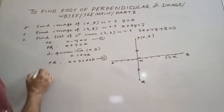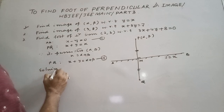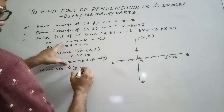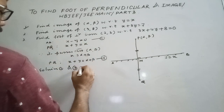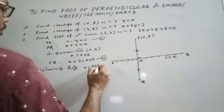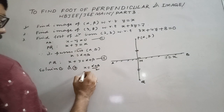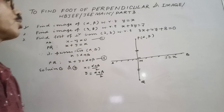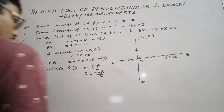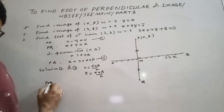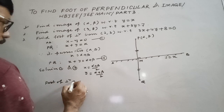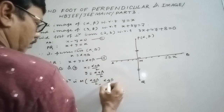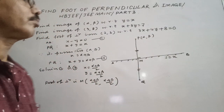Solving equations 1 and 2, if you add them you get 2x = α + β, so x = (α + β)/2. Similarly you get y = (α + β)/2. So we are getting the coordinates of M. The foot of perpendicular M is at ((α + β)/2, (α + β)/2).